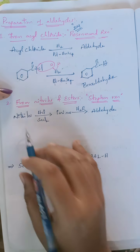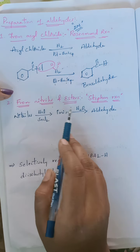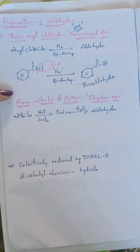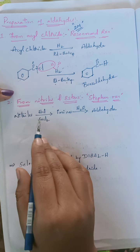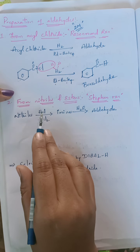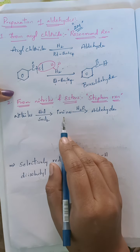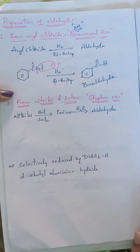The second method of preparation of aldehyde is from nitriles and esters, and this reaction is known as the Stephen reaction. When nitriles undergo reaction with stannous chloride (SnCl₂) and HCl, they first convert into an intermediate called imine, which again on hydrolysis converts into aldehydes.